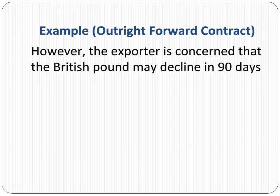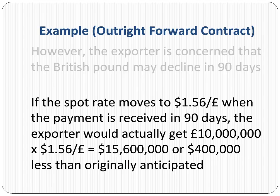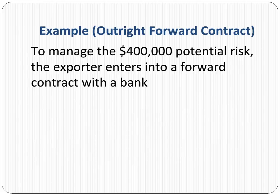However, the exporter is concerned that the pound may decline in 90 days in the spot market. For example, if the spot rate moves to $1.56 per pound when the payment is received in 90 days, the exporter would actually get $15,600,000 US dollars — $400,000 less than originally anticipated.